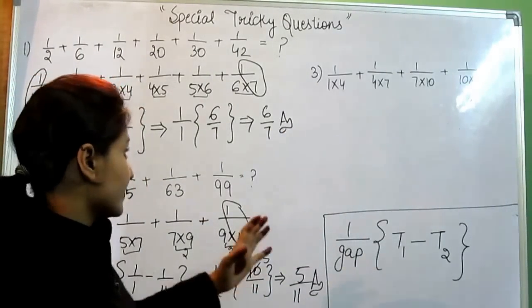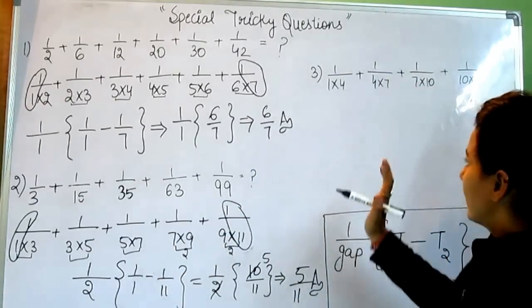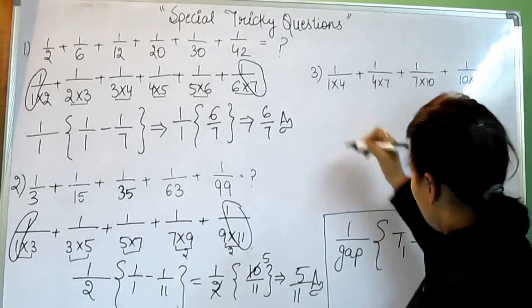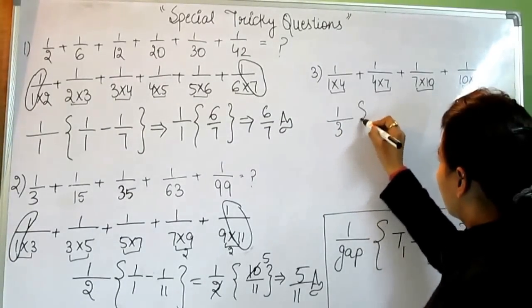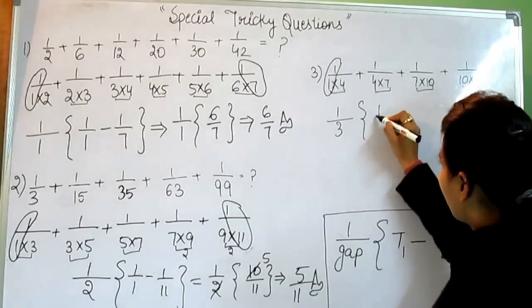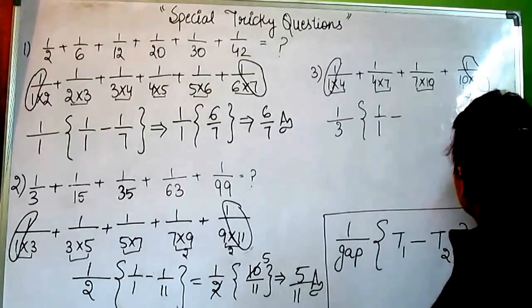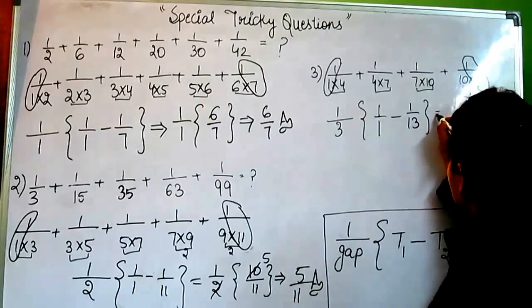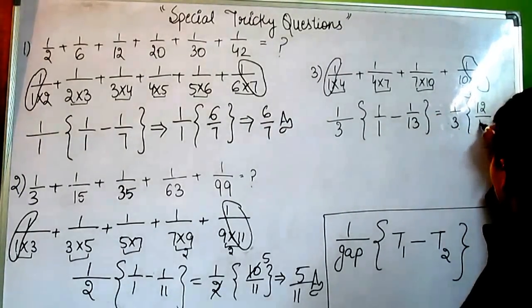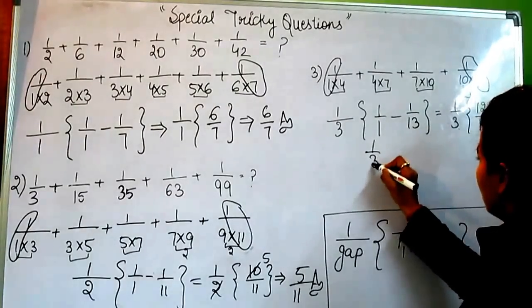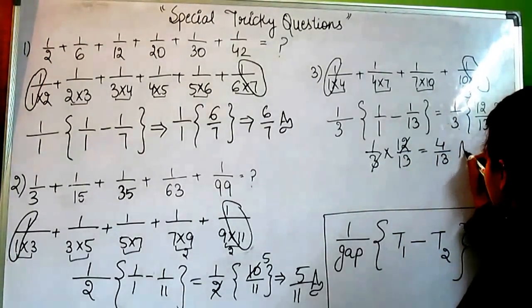So now, third question. In third question, we don't have to write in any other term. It is already solved. So we'll just have to apply this formula: 1 by gap is, if you can see, gap is same, that is 3. So apply 3 here. And T1 is this: 1 by 1 minus T2 is 1 by 13. Now, if you solve this by LCM, your answer would be 12 by 13. And when you solve it further, 1 by 3 into 12 by 13, your answer would be 4 by 13.